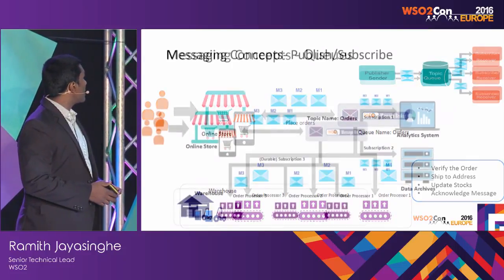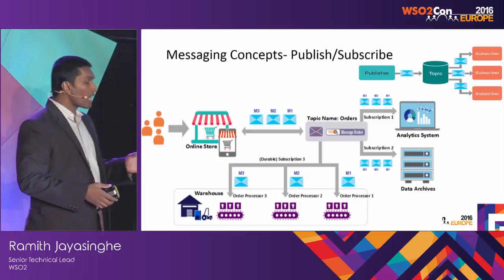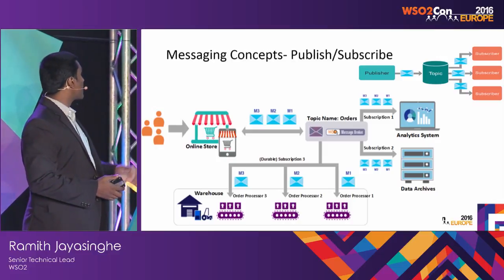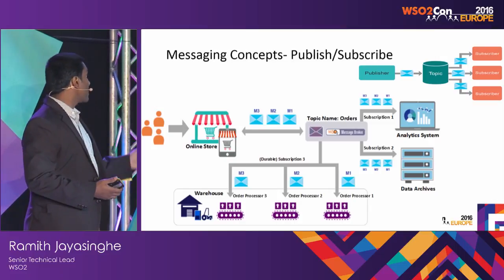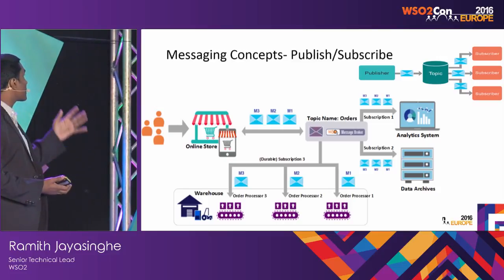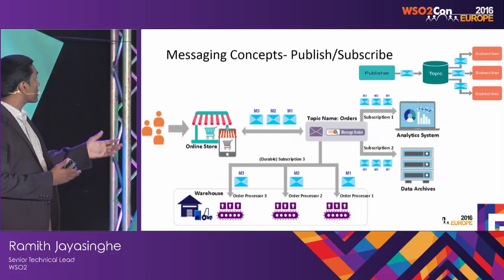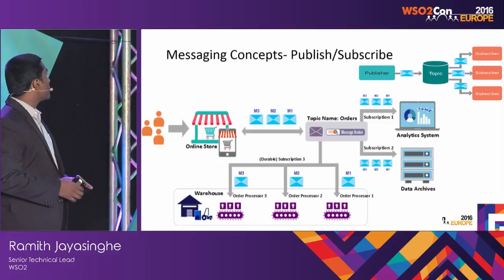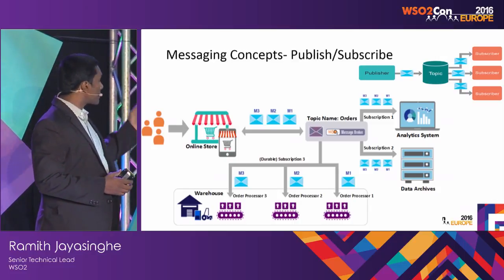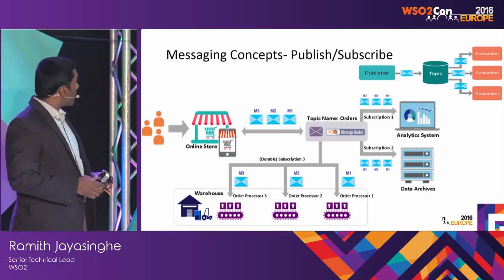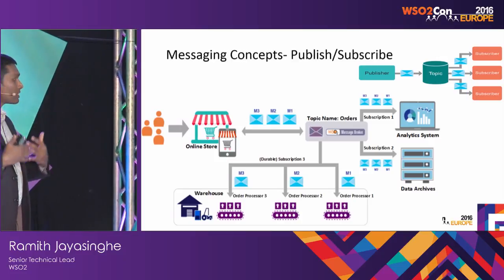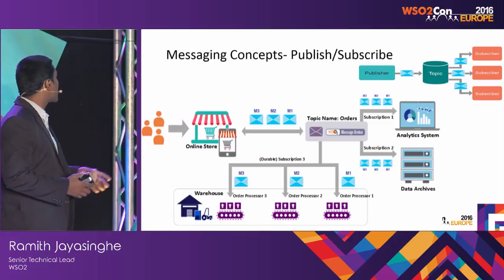The other concept is PubSub, basically topics. When you keep sending messages and there are multiple parties who want to receive them, each one gets their own copy. For example, if you want to scale out the business — bring in analytics or archive all orders — you create a subscription for a topic. Messages M1, M2, M3 will go to both the analytic systems and the data archive. The consumers and publishers are decoupled, and the broker manages sending out messages on behalf of the publisher.